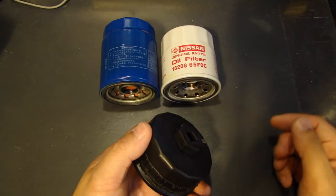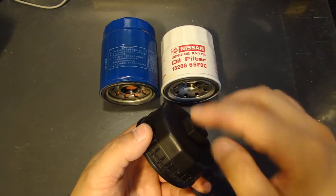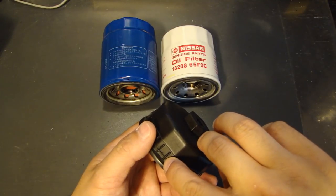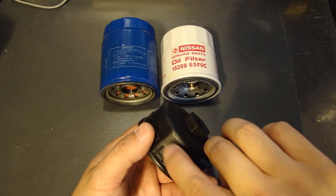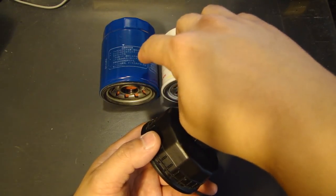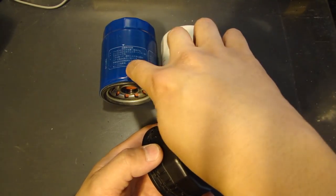So these are very common size for Honda and Nissan. However, having 67 millimeter and 65 millimeter on this filter wrench, it doesn't exactly fit these two filters.